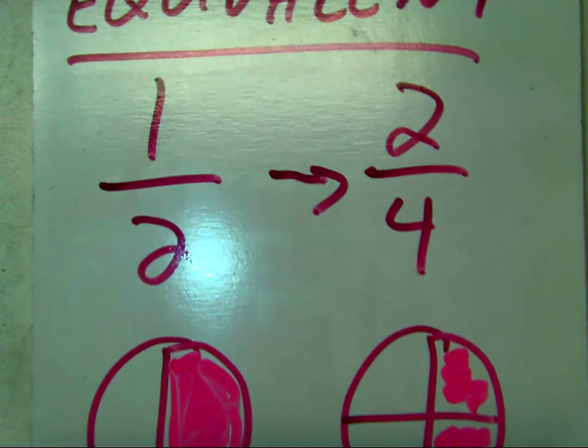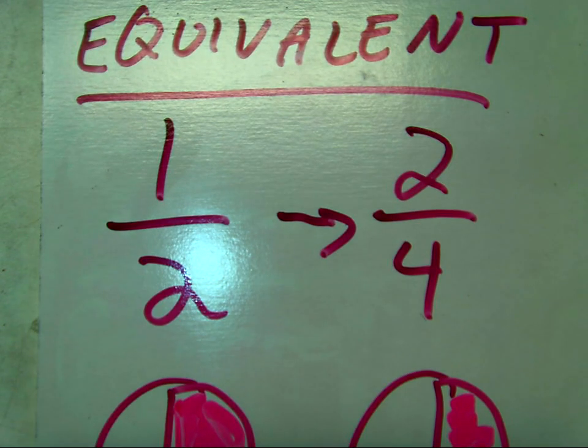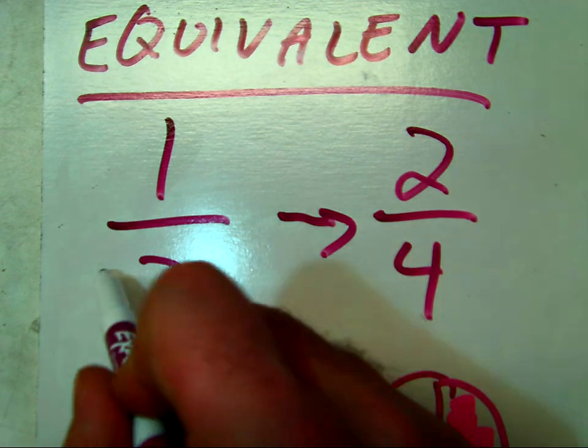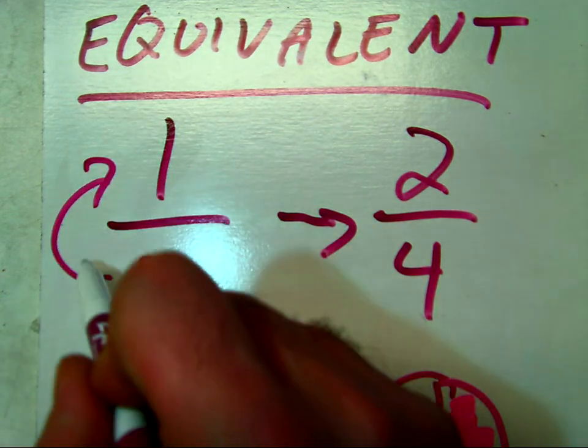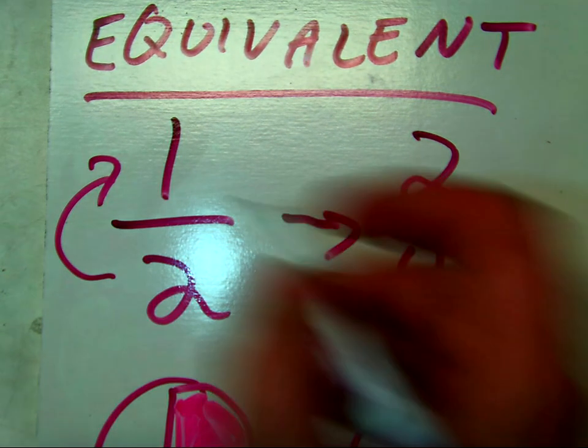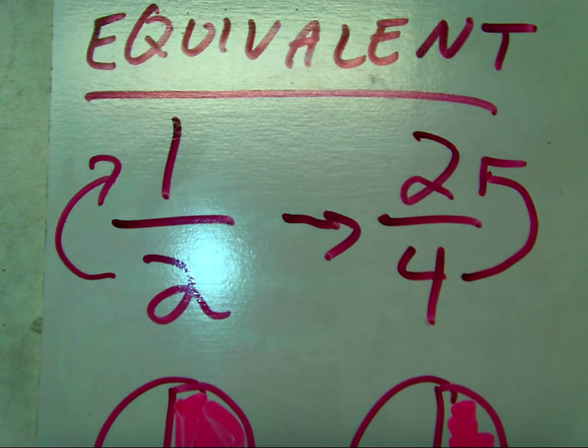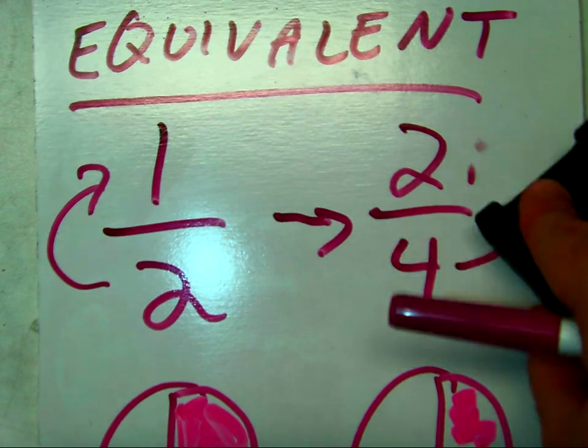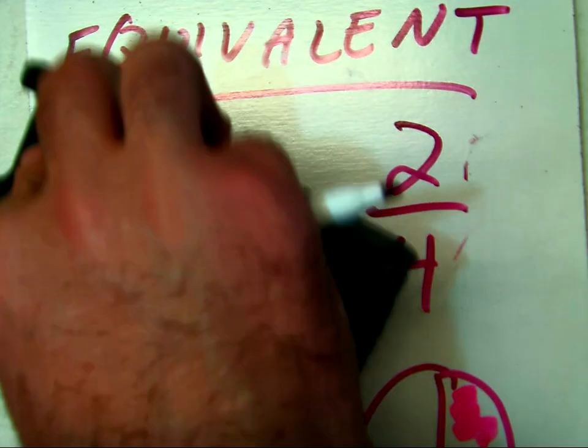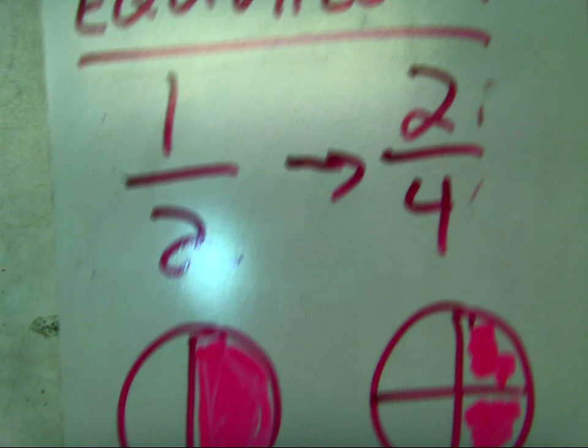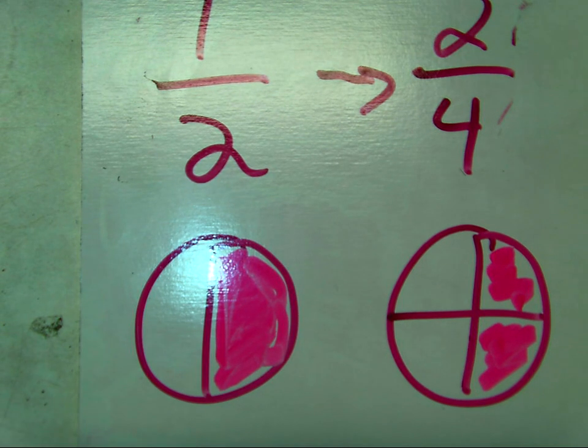Now, if you notice, the relationship between top and bottom is the same. Between the numerator and denominator is the same. The denominator is twice what the numerator is, and the denominator in two-fourths is also twice what the numerator is. That's why they're equivalent. The relationship between top and bottom is the same, and they can be visually represented in the same way.